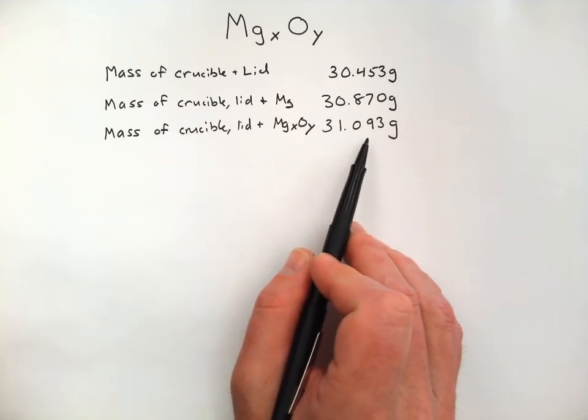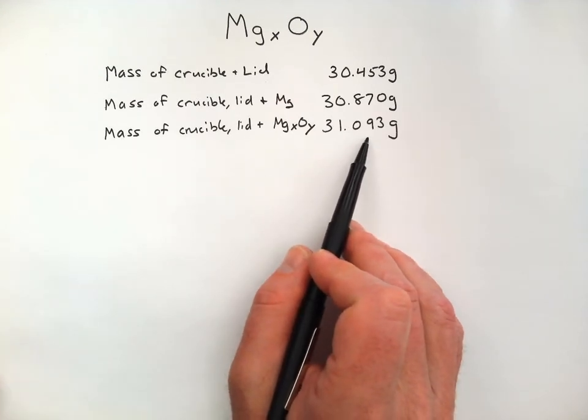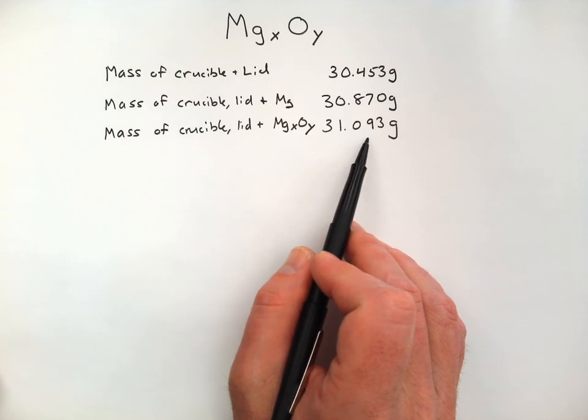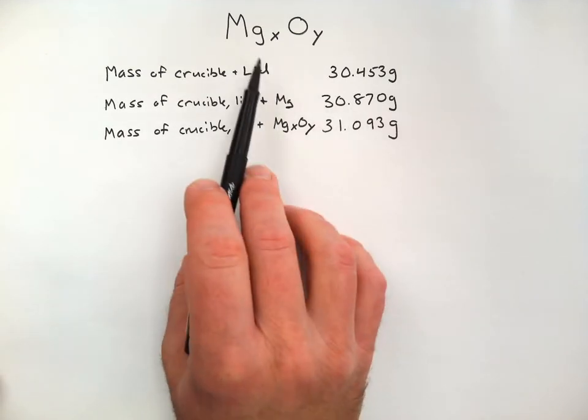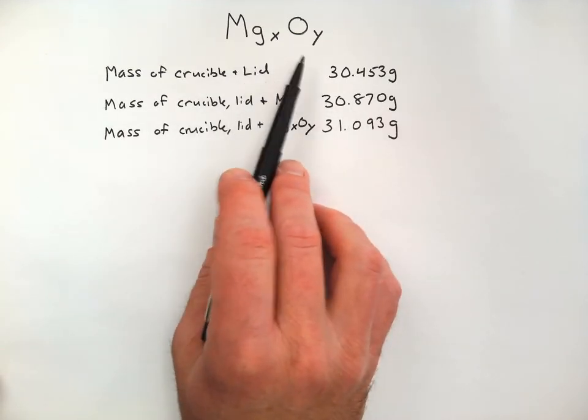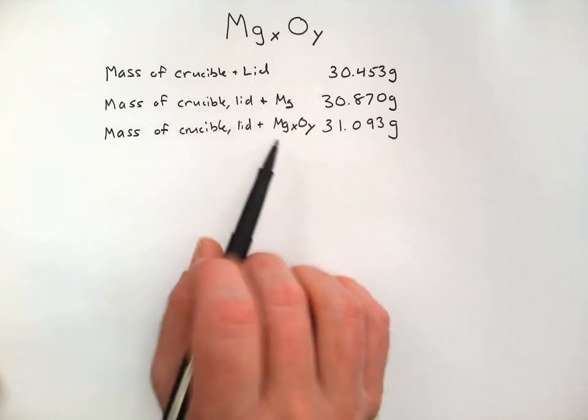Now, the first step for finding an empirical formula is that you have to start with the mass of each element in the compound, so the mass of magnesium and the mass of oxygen. To get those, we just need to do a couple of quick subtractions.